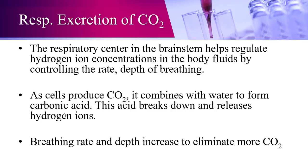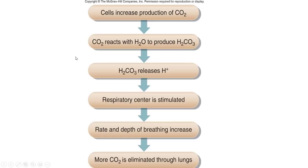The respiratory center in the brainstem regulates hydrogen ion concentration by controlling the depth and rate of breathing. As cells produce carbon dioxide, it combines with water to form carbonic acid (H₂CO₃), which breaks down to release hydrogen ions. Breathing rate and depth increase to eliminate more carbon dioxide — without CO₂, carbonic acid cannot form and fewer hydrogen ions are released. This flow chart shows: CO₂ + H₂O → carbonic acid → H⁺ release → stimulates respiratory center → increased breathing → more CO₂ eliminated.